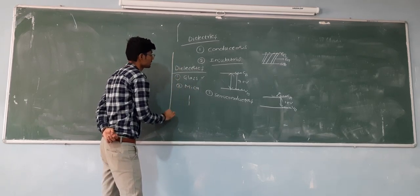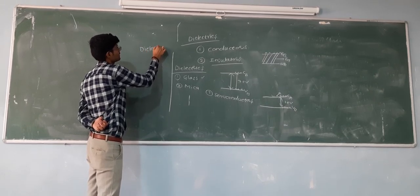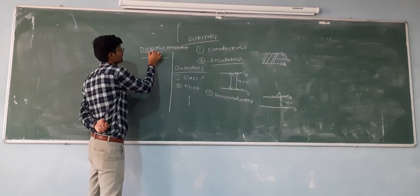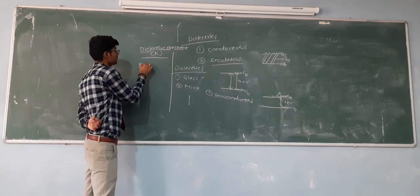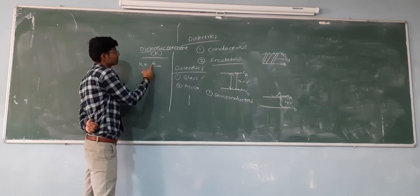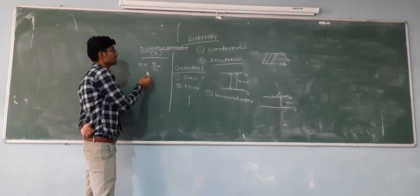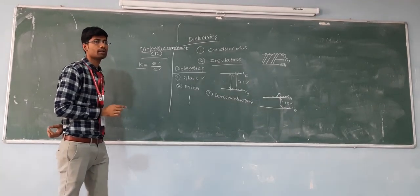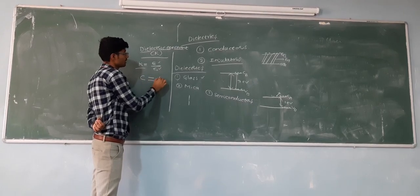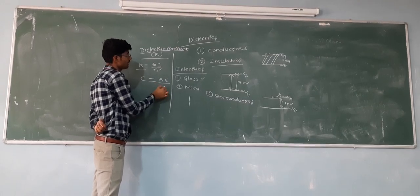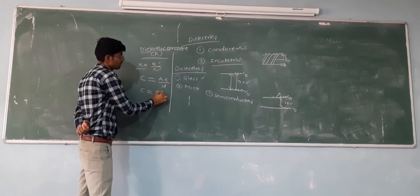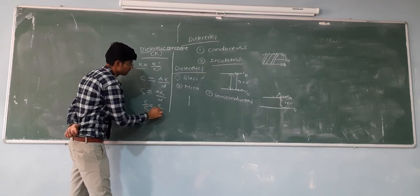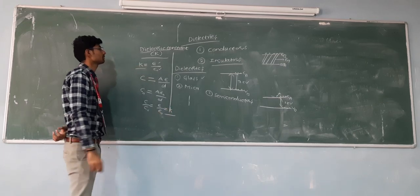Now we will see the dielectric constant. The dielectric constant is indicated by k, and it is defined as the permittivity of the medium divided by the permittivity of free space. We can also find it using capacitance: for a parallel plate capacitor in a medium, C equals A·ε/d, and in free space C₀ equals A·ε₀/d. So the ratio C/C₀ equals ε/ε₀, which equals k — the dielectric constant.